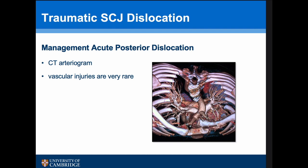An acute posterior dislocation is in some ways a much more serious injury. It's absolutely essential not just to do a CT scan but to do a CT arteriogram to look for any associated vascular injuries — in fact these are very rare, but this scan is important to assess what's happening. When referring a posterior dislocation to a specialist unit, we would always ask for a CT arteriogram rather than just a straightforward CT scan.